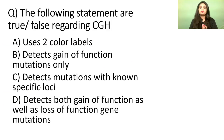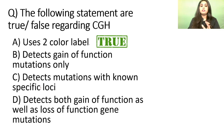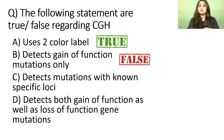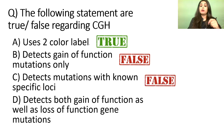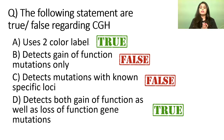Now let's label every option as true or false like in AIMS. Number one — it uses two colour labels — agreed, true: it uses red and green. Number two — it detects gain of function mutation only — false, it detects both gain and loss. Number three — it detects mutations with known specific loci — false, we cannot detect the specific locus. Number four — it detects both gain and loss of function mutations — true.